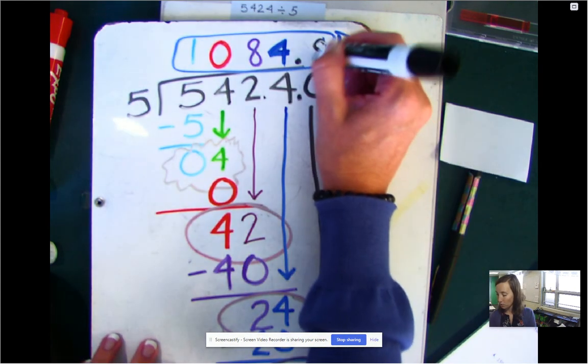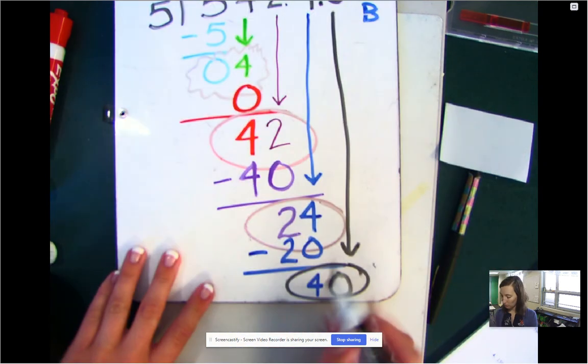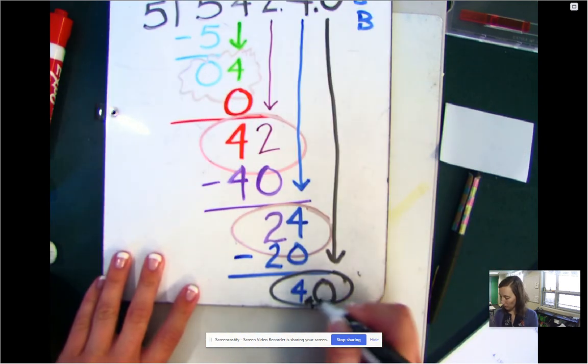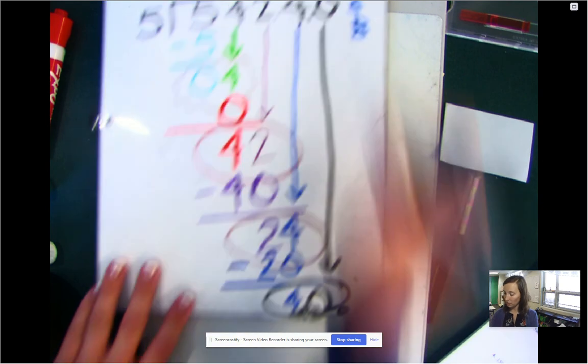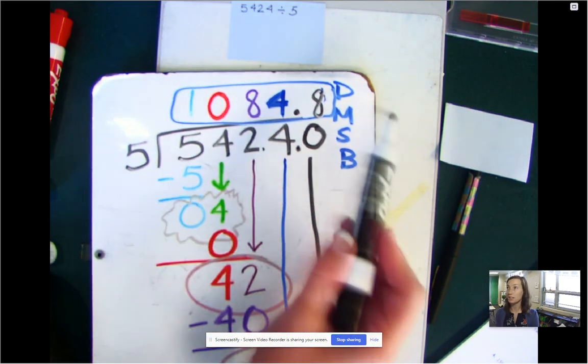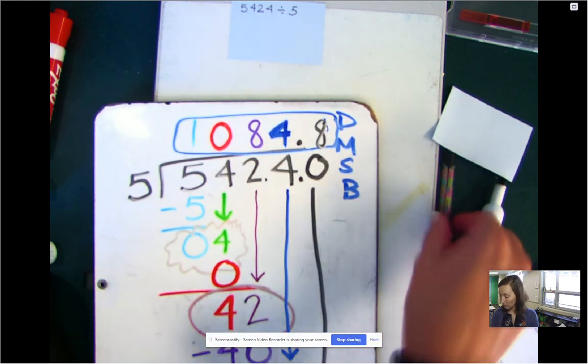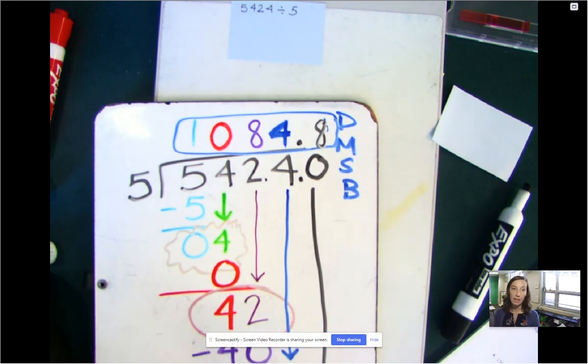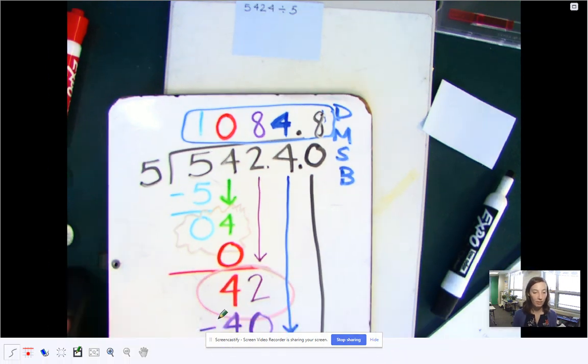Five fits into 40 eight times because eight times five is 40. Eight times five is 40. So I write down 40. 40 minus 40 is zero. There's nothing left to bring down. So now I'm done. So another possible way to express the answer to this is 1084 and eight tenths. And that is an example of long division.